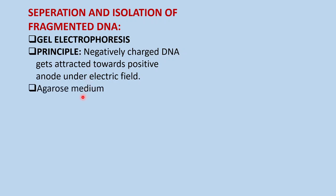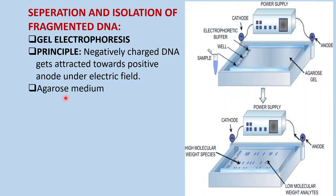The medium over which the DNA will move is called the agarose medium. It is a gel piece prepared from agar, which is obtained from Gelidium, an algae. Here you can see the gel electrophoresis device; this is the agarose gel piece for the smooth movement of the DNA. This device has a positive anode and a negative cathode, which is connected to a power supply.